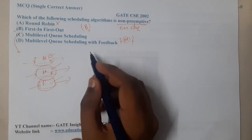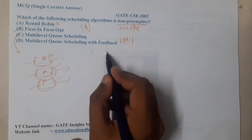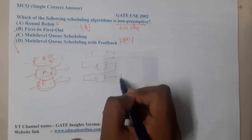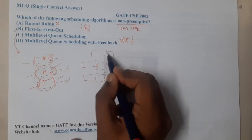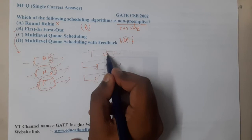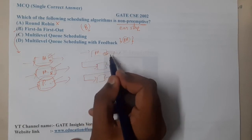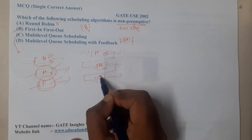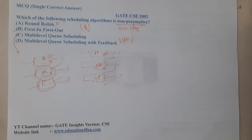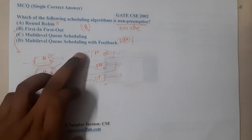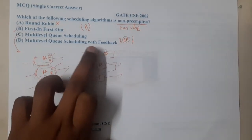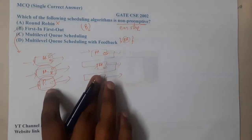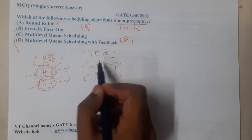When it comes to the multi-level feedback queue, all processes start at the top level. The first level uses Round Robin with time quantum 2, the next uses Round Robin with time quantum 10, and the next is priority-based. This is multi-level queue scheduling with feedback. In both cases, Round Robin is one of the most commonly used algorithms.